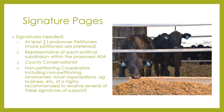Examples of potential non-petitioning cooperators include local UW Extension educators, any local ag retailers, local co-ops, local conservation groups, any producer-led groups in the area, local agronomists, any non-for-profit groups, local land trusts, neighbors within the AEA, and other local businesses impacted by the surrounding agricultural community.